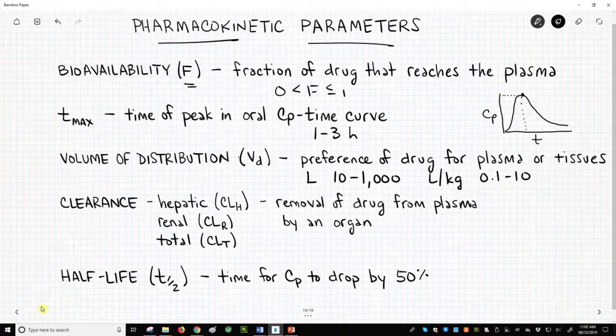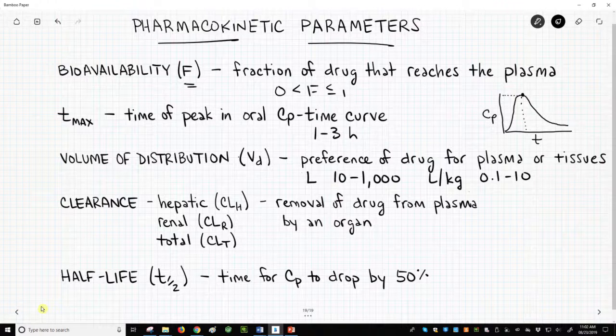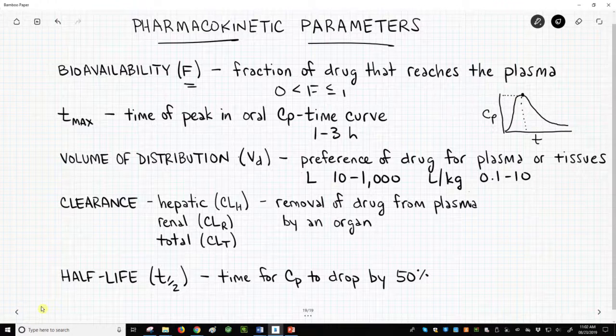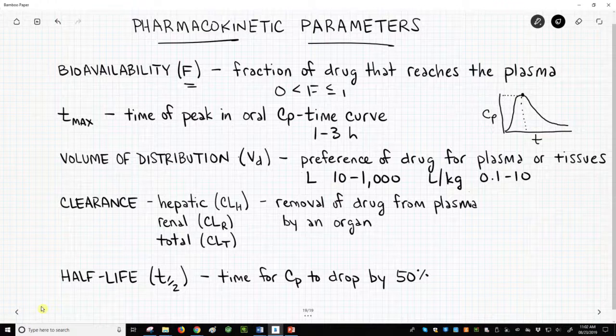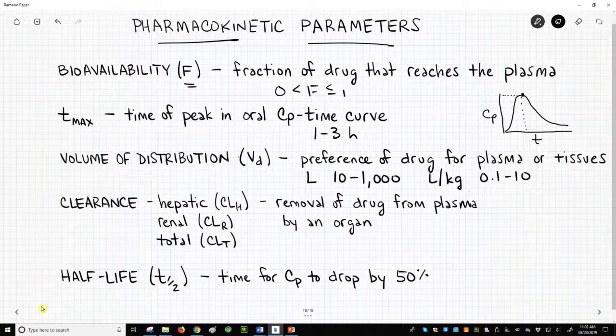Clearance: hepatic, renal, and total clearance. Clearance is related to how quickly a drug is removed from the plasma as it passes through an organ, whether it's the liver, hepatic clearance, the kidneys, renal clearance, or all organs, total clearance. Clearance drives drug metabolism and excretion.